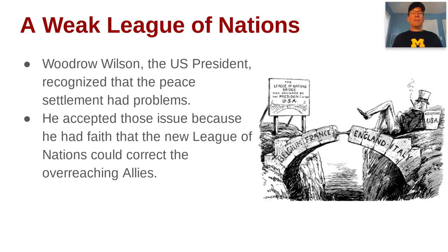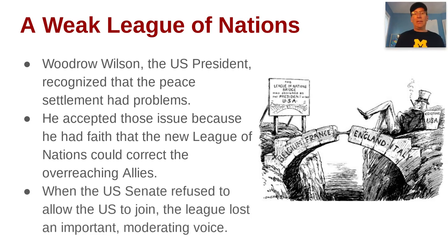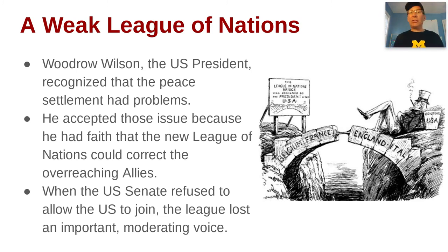The problem was that the other allies really did want to punish Germany, and we needed the United States in there to rein back that punishment. So when the U.S. Senate refused to allow the United States to join the League of Nations, the moderating voice of the U.S. remained out. The League of Nations became a tool that wound up not fairly or evenly balancing the issues of Europe — seen as a weak institution. A political cartoon shows the United States as the keystone of the League of Nations arch: without that keystone, the bridge collapses as soon as somebody puts weight on it.